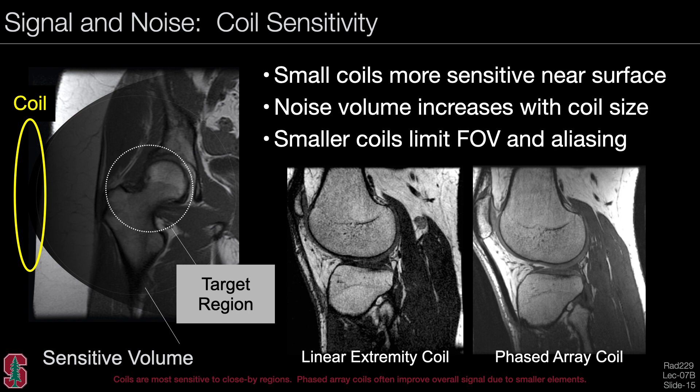Another important coil consideration is the comparison between linear, quadrature, and phased array coils. Going from a simple linear birdcage coil to a quadrature coil should give approximately a square root of 2 improvement in SNR. Phased array coils will do similarly or even better than quadrature coils. Here you can see a dramatic improvement in SNR between a linear extremity coil and a phased array coil with exactly the same sequence parameters.